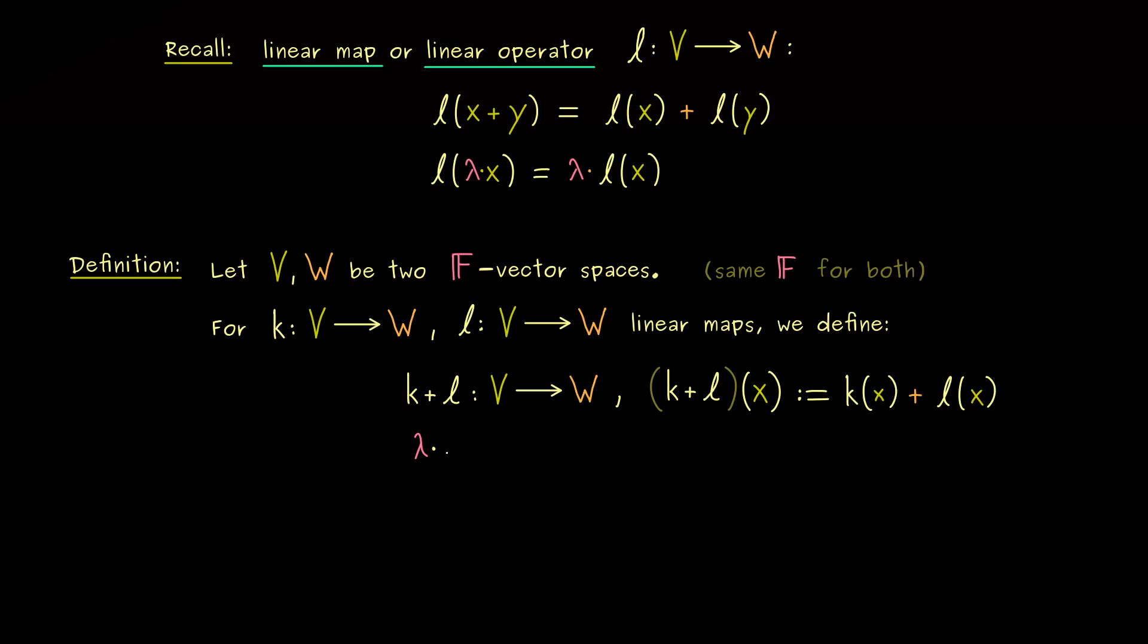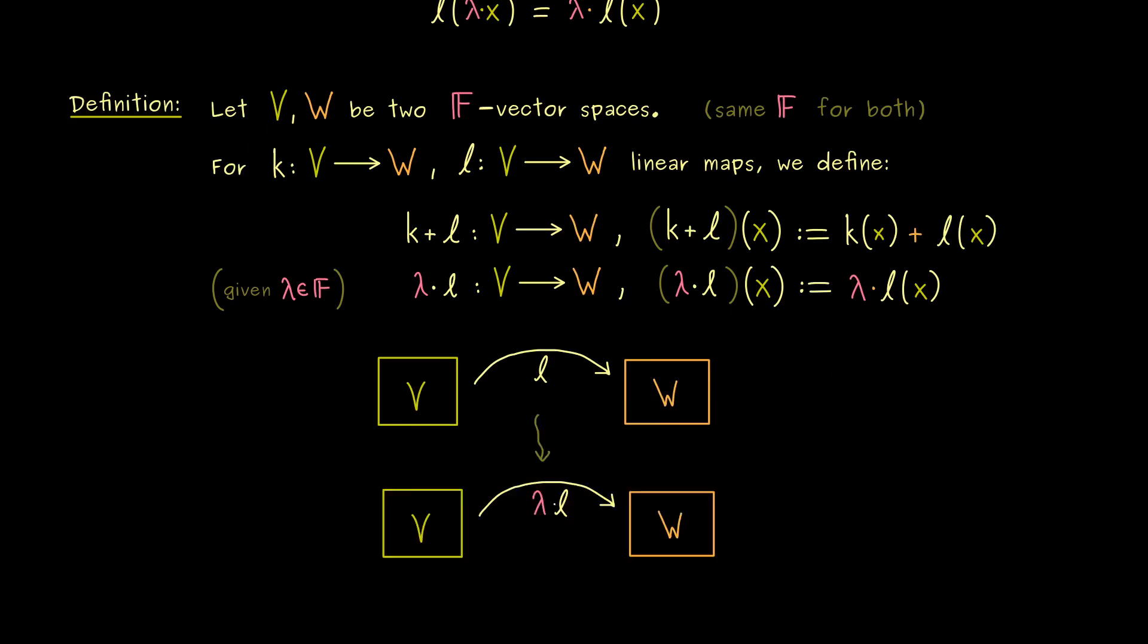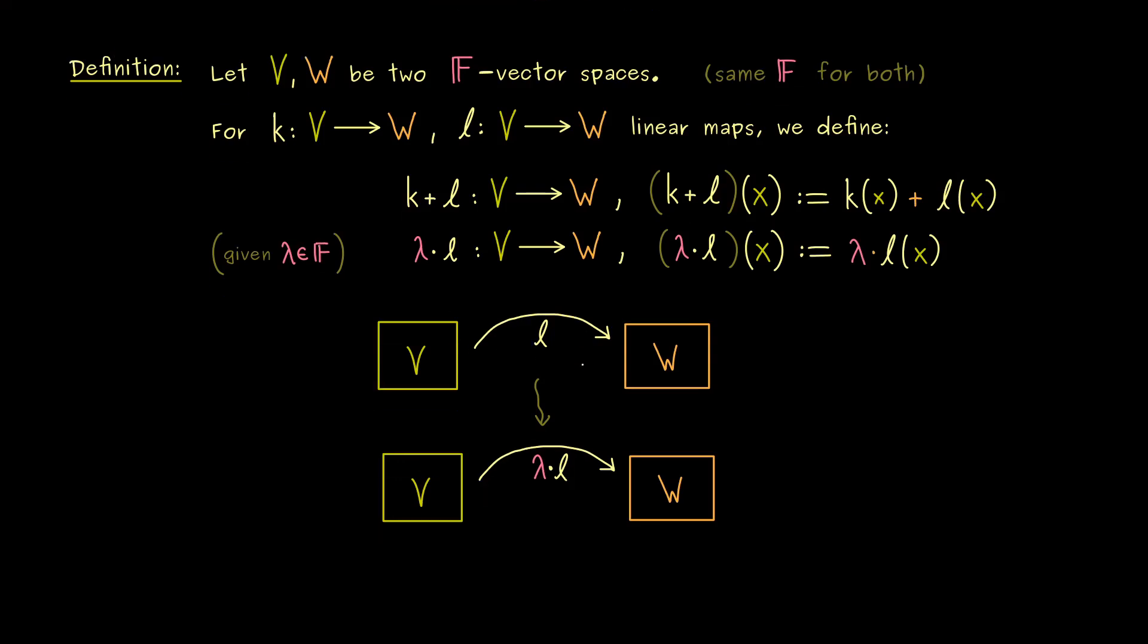And in a similar way, we can also scale a linear map. For this, we just need a given scalar lambda from F. And then, as before, we can just define lambda times l of x. And again, we do that by simply scaling the value that comes out from the linear map l. So what we have is that this multiplication sign is the scalar multiplication in W.